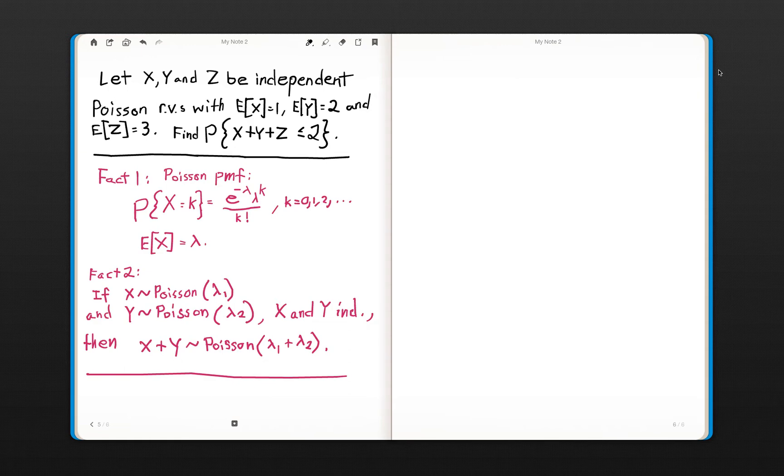Welcome back everyone to the Actuarial Academy. This is Dr. Me, and we are preparing to work on a problem that involves three independent Poisson random variables.